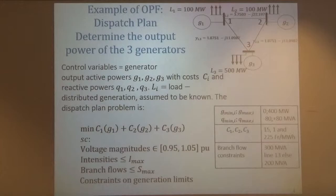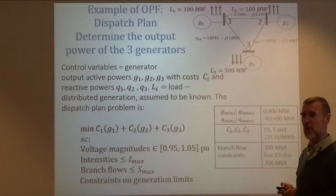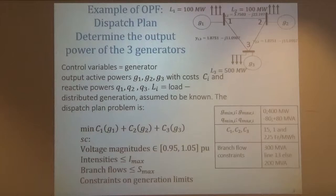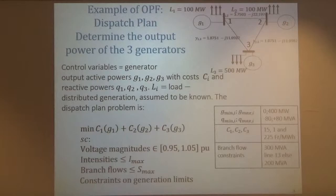I also have line limits. The line limitations come typically from maximum current. A given cable has a maximum capacity of carrying a certain current. If there is too high current, the line will get hot, the insulators will get damaged, and you will have very large losses. The normal way to present those limitations is to put limits on the current, but to simplify, what is often done is to put a limit on the power flow over the line.